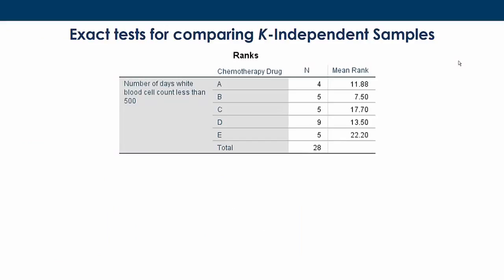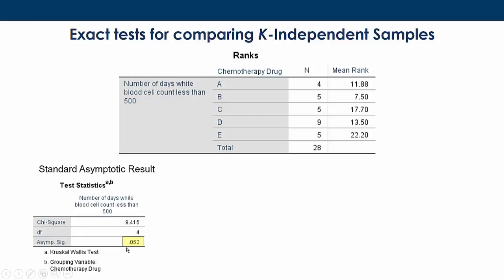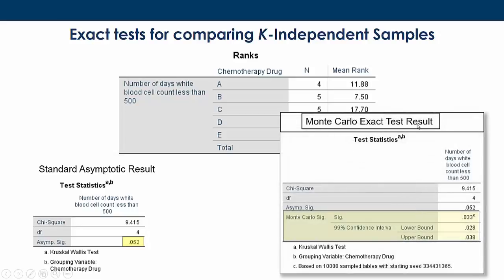We can also apply exact tests to non-parametric tests — in this case, a k-independent samples test. Using the standard asymptotic test, we find there is no need to reject the null hypothesis; it's a non-significant result. Whereas if we use a Monte Carlo exact test, we would reject the null hypothesis because it provides a more exact probability, and in fact also provides confidence intervals for those probabilities.